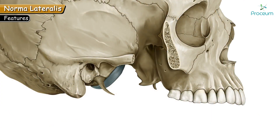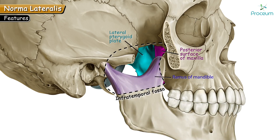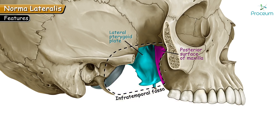Below the zygomatic arch, the fossa is named the infratemporal fossa — present below the temporal fossa, hence called infratemporal. It is an irregular space below the zygomatic arch. The boundaries of the infratemporal fossa are: anteriorly the posterior surface of the maxilla, medially the lateral pterygoid plate, laterally the ramus of the mandible, and the roof is formed by the greater wing of the sphenoid bone.